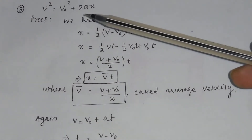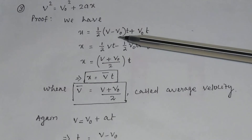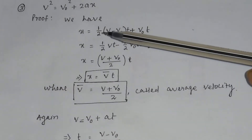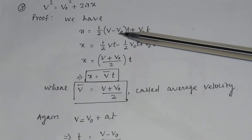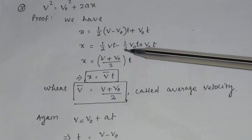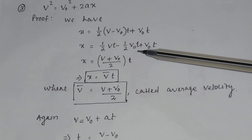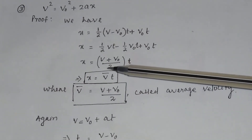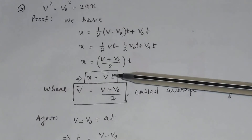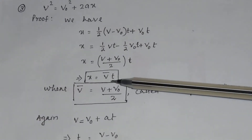Now we will deduce the third equation of motion: v² equals v0² plus 2a·x. We have deduced that x equals half times (v minus v0) times t plus v0·t, meaning displacement equals the area of the triangle plus v0·t. We can rewrite this as x equals half·v·t plus half·v0·t minus half·v0·t plus v0·t, which simplifies to x equal to half·v·t plus half·v0·t, or x equals (v plus v0) divided by 2, times t. Here (v plus v0) divided by 2 is the average velocity, so displacement equals average velocity times time. You have to remember this formula.